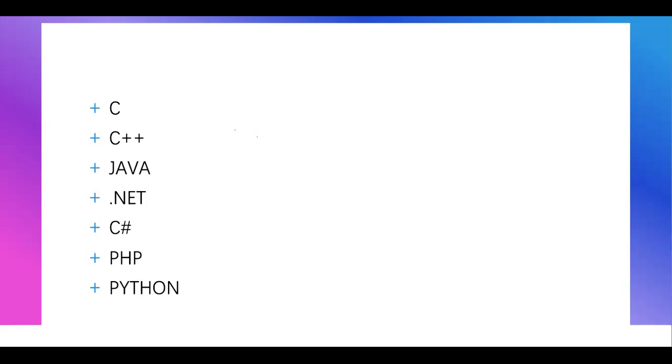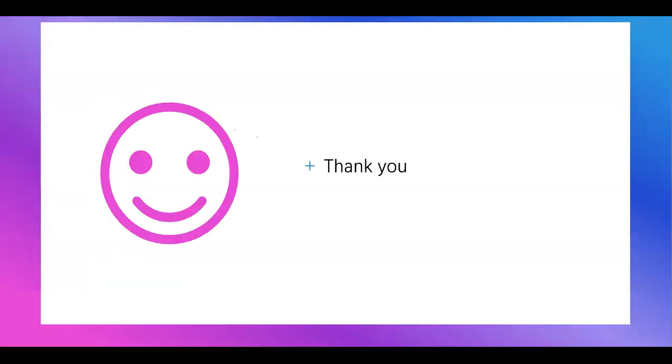Let's look at some examples. C language is a platform dependent language — once we change the operating system, it cannot be executed. C++ is partially dependent and partially independent: if we use inbuilt functions related to Windows, it will only work on Windows; if we don't use Windows-specific functions, it can work across systems. Java and .NET are platform independent. PHP and Python are also platform independent languages. Thanks for watching the video.